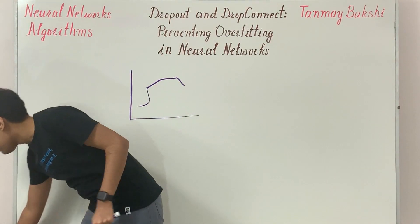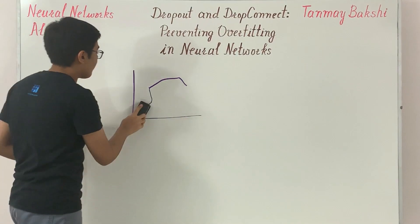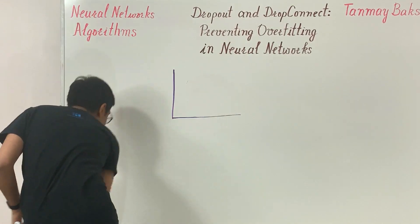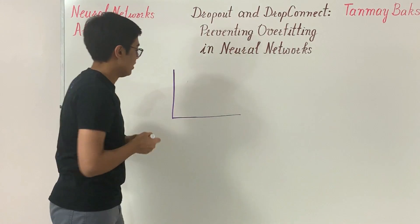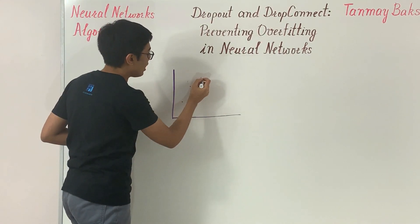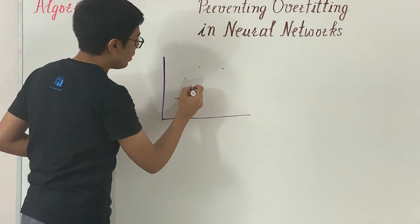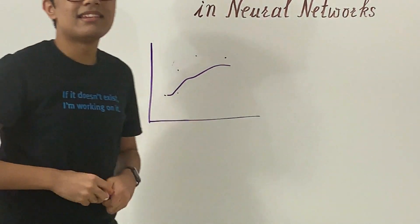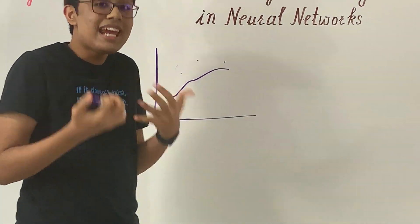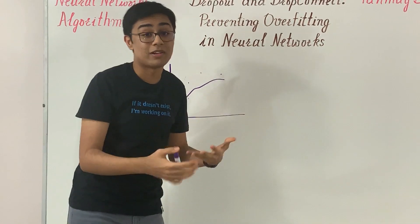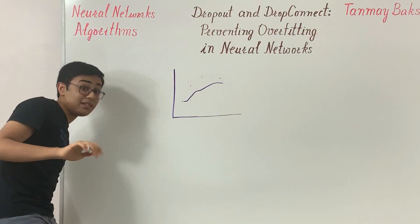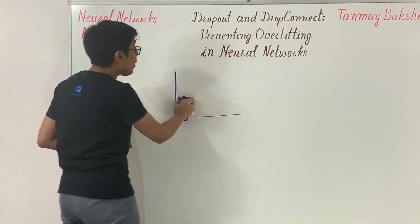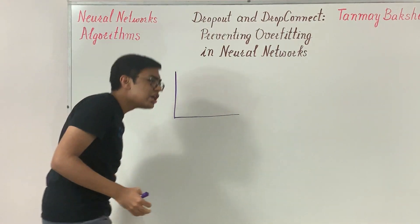Underfitting is what happens when your neural network draws a very ambiguous line to your data. For example, if you've got a dataset and your neural network just draws a very simple line through it, it's not learning a good fit and could use more parameters.